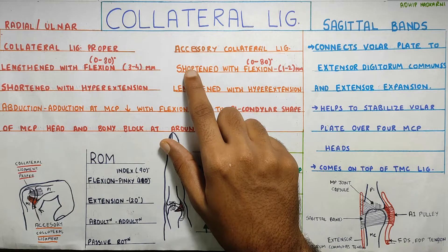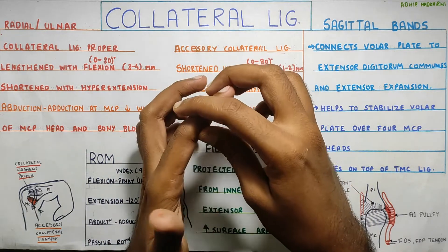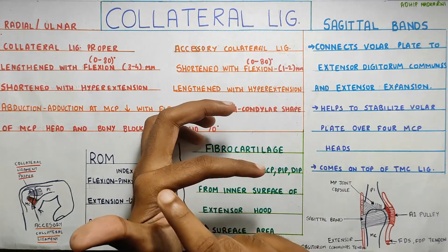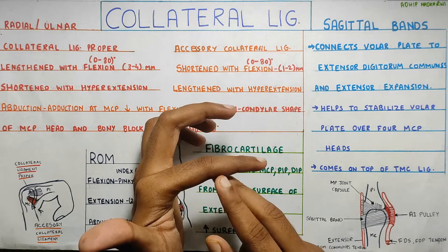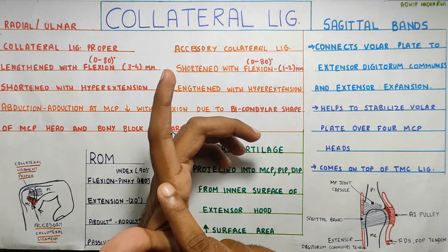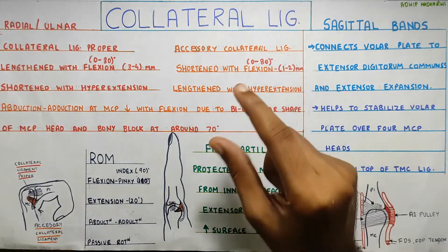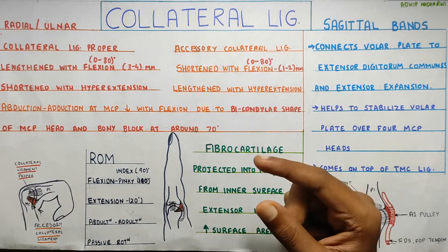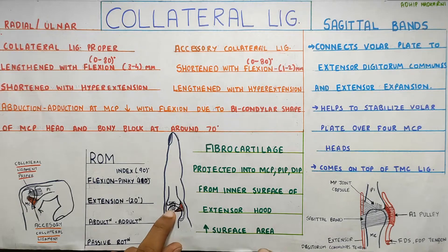The accessory collateral ligament shortens with 0 to 80 degrees of flexion. So as I go into flexion, the collateral ligament proper will lengthen and the accessory will shorten. And then as I go into extension, exactly the opposite will happen — the proper ligament will shorten and the accessory ligament will lengthen. So both of them lengthen and shorten at different ranges.